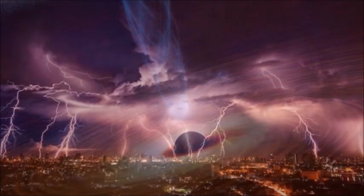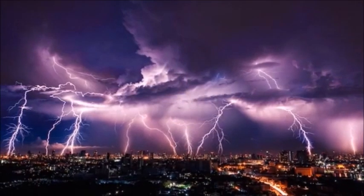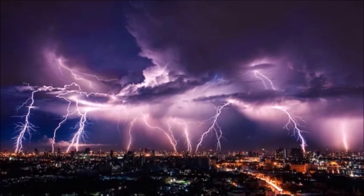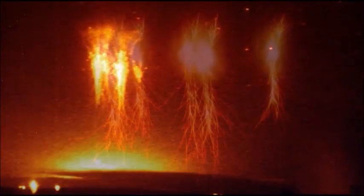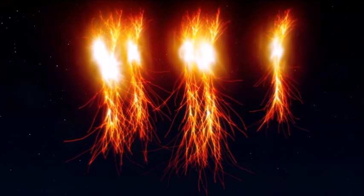In fact, the terrestrial gamma ray bursts generated by thunderstorms were discovered by chance in the 90s by artificial satellites that searched the celestial sky in search of black holes devouring matter and other equally violent cosmic phenomena. At the beginning, nobody expected that such extreme phenomena would occur in our atmosphere.